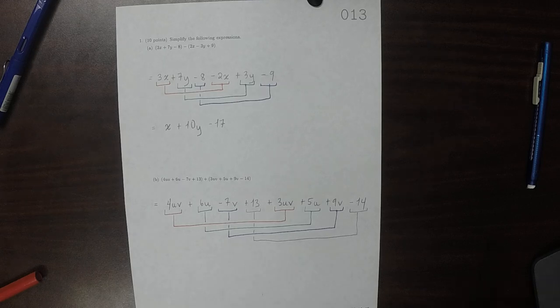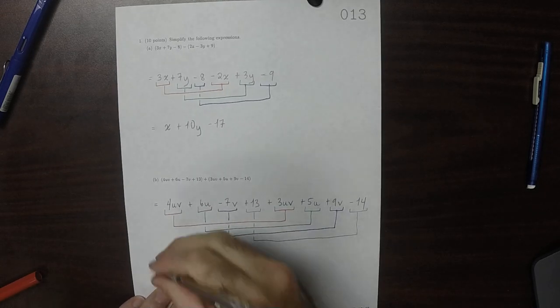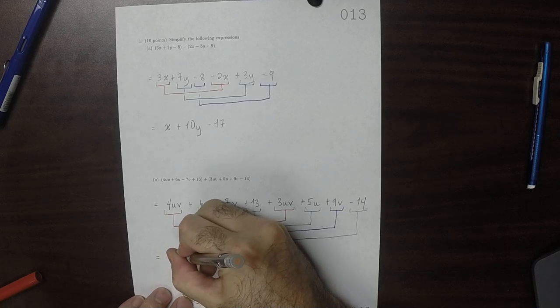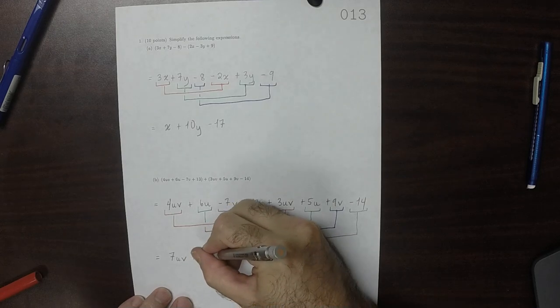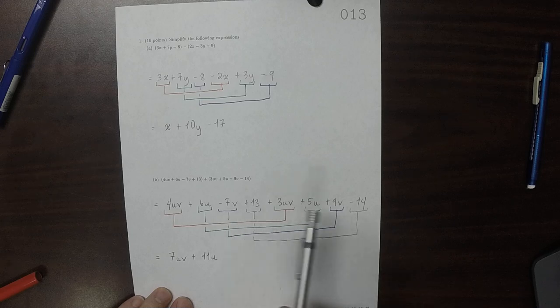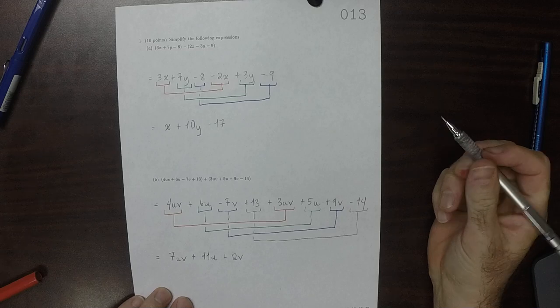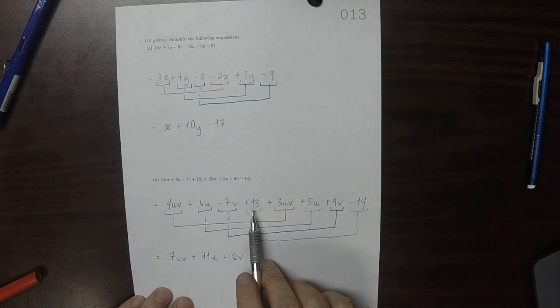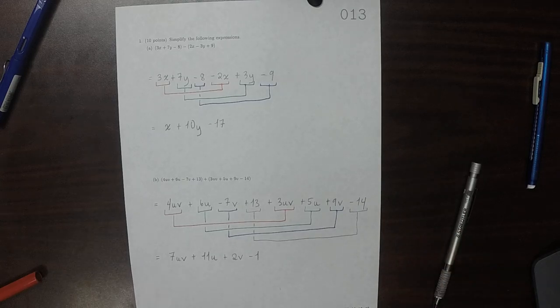So those are the groups that need to be all collected. So we have 4uv plus 3uv, that's 7uv. 6u plus 5u, that's 11u. Negative 7v plus 9v, that's 2v. And then 13 minus 14 is negative 1.